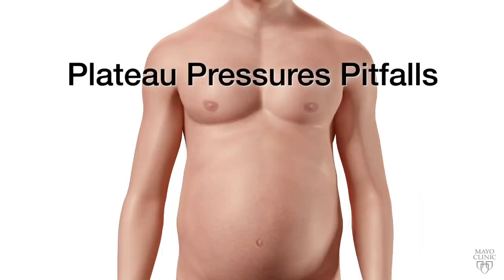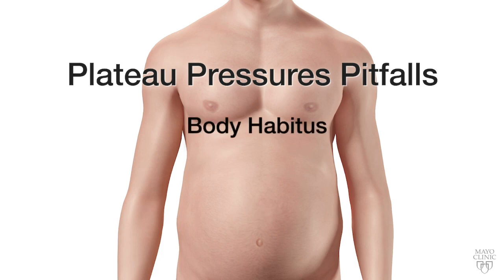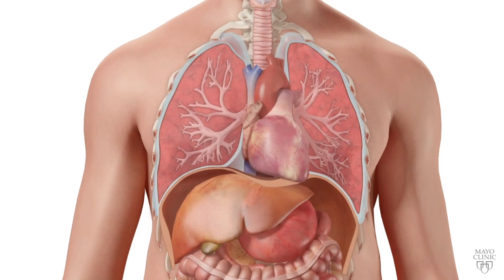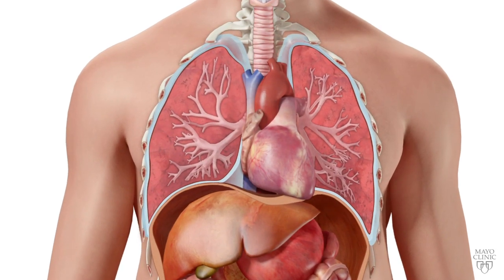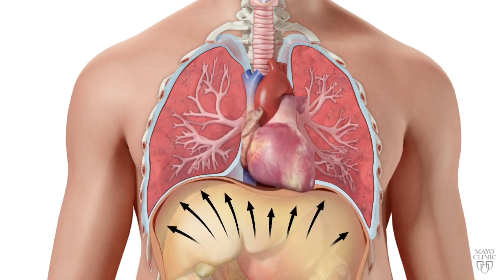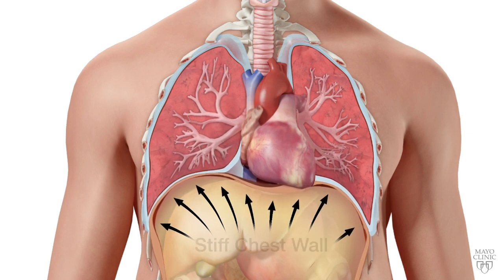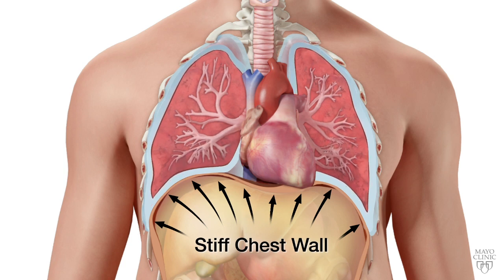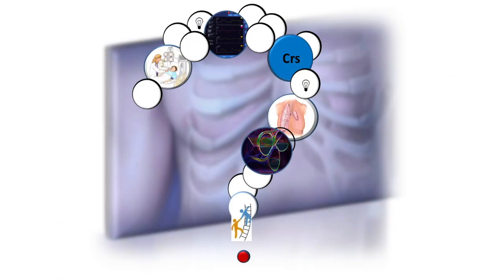The problem is that plateau pressure is influenced not just by our ventilator settings, but patient characteristics such as body habitus, positioning, effects of gravity, and abdominal pressure. For example, patients who are obese or who have abdominal distension for any pathology may have a lower chest wall compliance and when measured can show falsely high plateau pressures. This makes plateau pressure an unreliable measure of safe lung ventilation. So if tidal volume and plateau pressure may not always be accurate in setting up safe ventilation of the baby lung, what do we use?